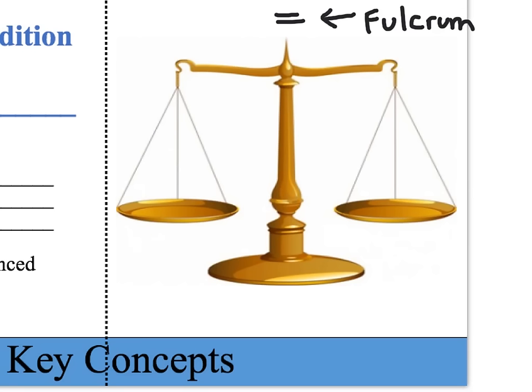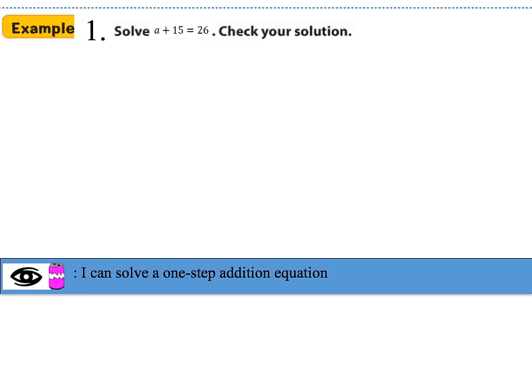Let's use these key concepts to discuss the following examples. Example one says solve a plus 15 equals 26, then check your solution. The first thing I want to do is draw a dashed line down the center of my equal sign, because that's going to show where the fulcrum of our equation is.